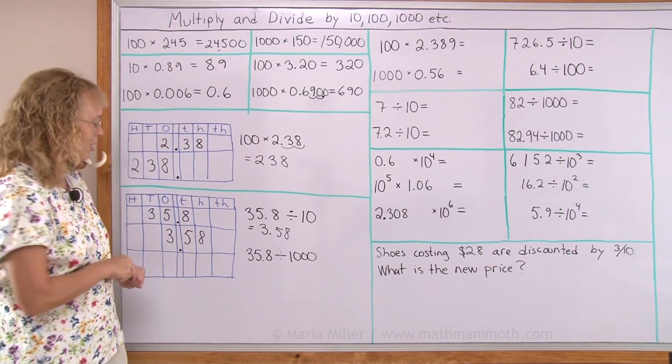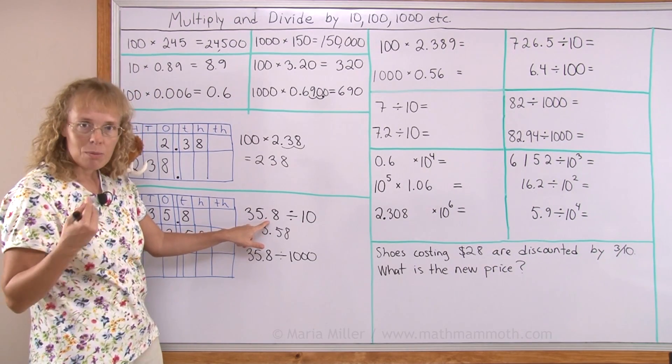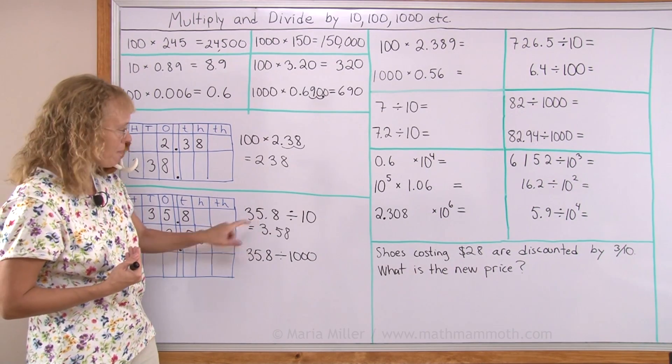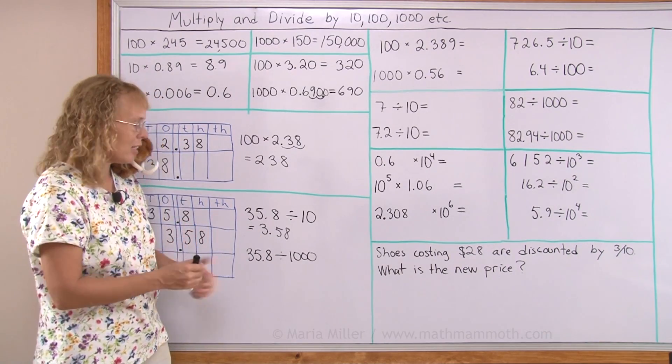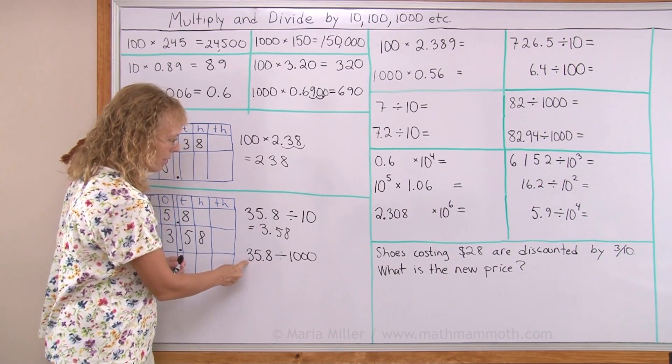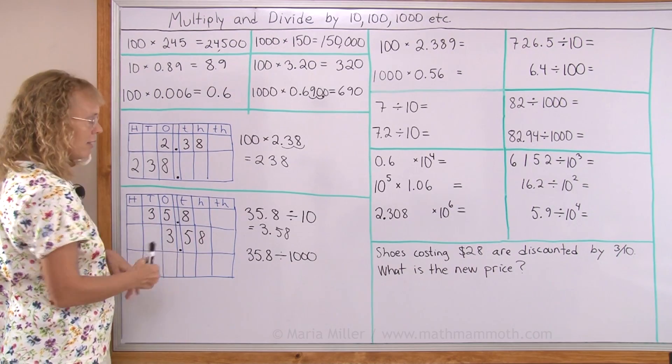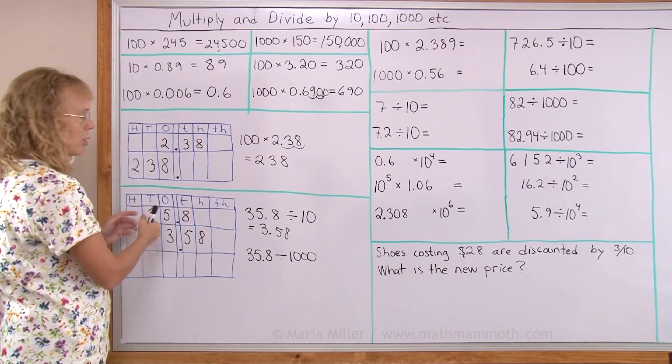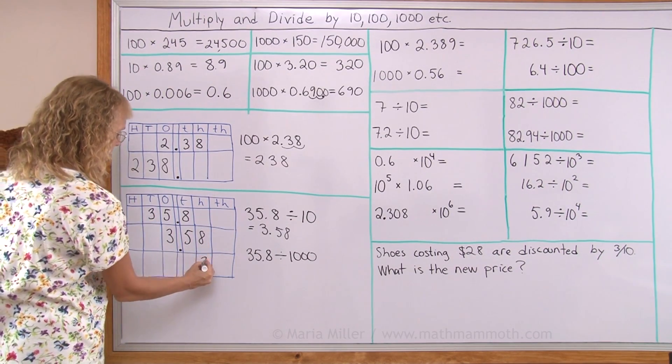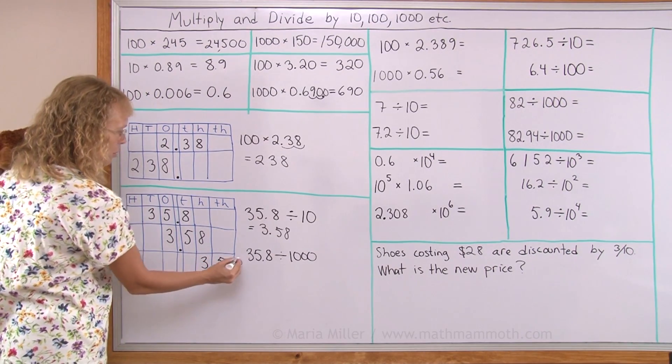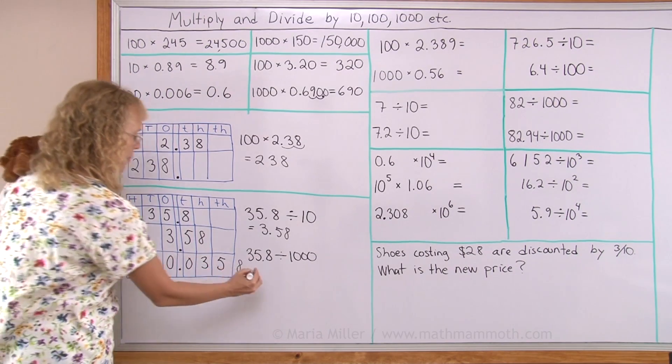And the shortcut, if you don't have a place value table, when you're dividing by 10 is that you move your decimal point just the opposite way so that the number becomes smaller. You move it here, 3.58. Or if you have a number you divide by 1000, you move the decimal point three steps to the left so that it becomes smaller. Like that. But I can do it here in the place value table too. This is my number. If I want to divide it by 1000, it means it moves three steps towards the smaller. So this 3 would move over here, then 5 and then 8 would go to the ten thousandths place. Then there would be zero here and point zero.